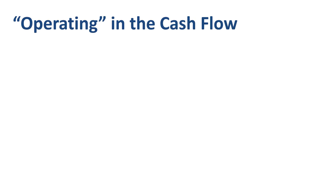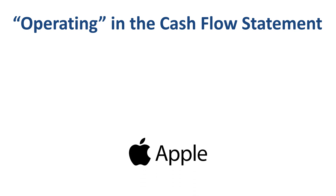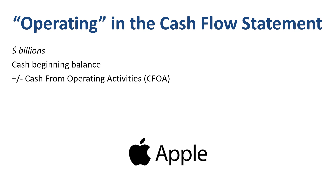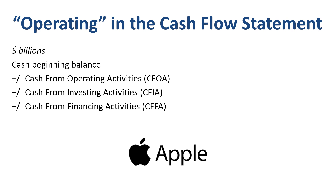Let's look at the cash flow statement of a company you have probably heard of before — Apple — and see how cash from operating activities fits into it. The format of the cash flow statement puts the cash balance at the beginning of the year at the top, then lists cash from operating activities, cash from investing activities, and cash from financing activities. If you add and subtract all those numbers, you get to the cash balance at the end of the year at the bottom.